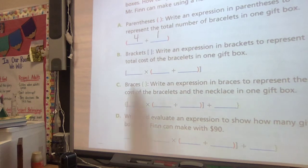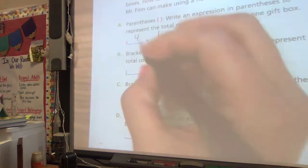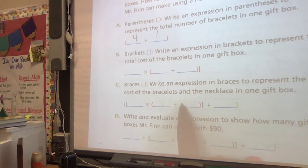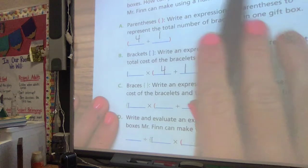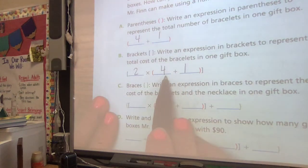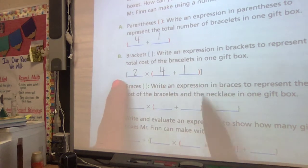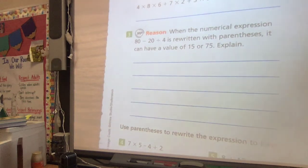Sometimes we see brackets or braces, which is another form of parentheses. We really don't see them very much. If you see brackets, they look like parentheses, but they are more solid or square-like. So let's write an expression in brackets to represent the total cost of bracelets in one box. We know that one box has 4 green bracelets and 1 gold, and we know that they each cost $2 to make. When we do this, this helps us to keep the 4 plus 1 separate from the 2, but we want all this to stay together.